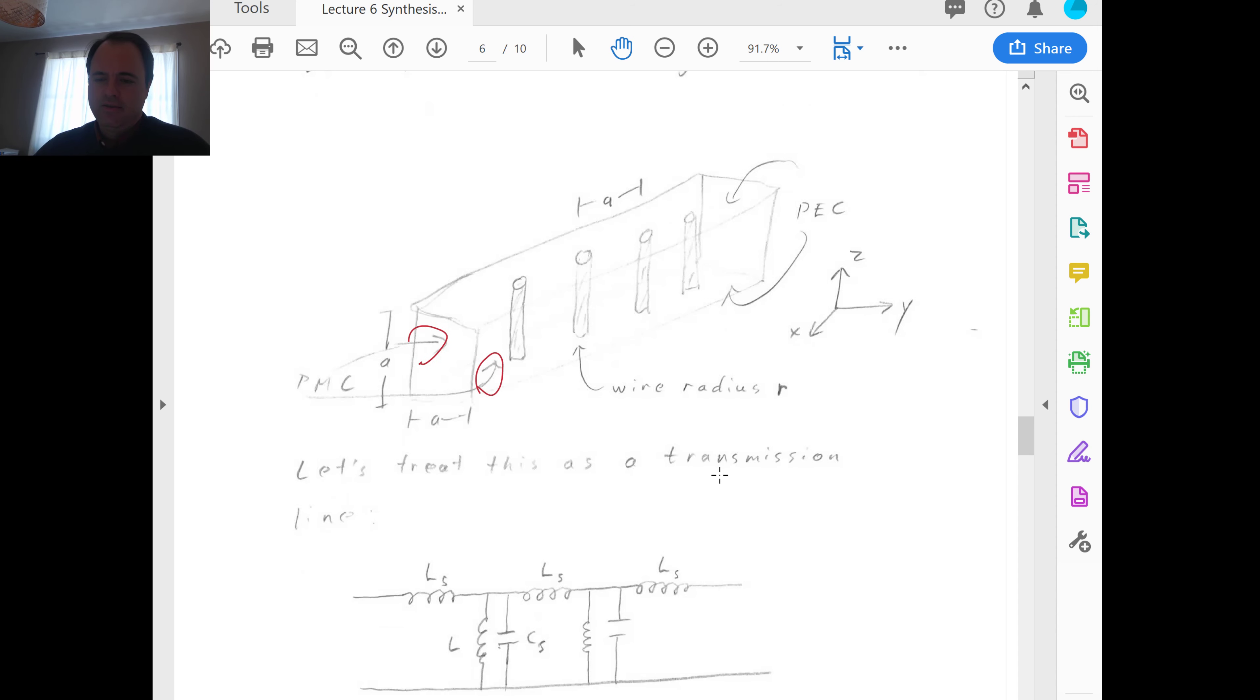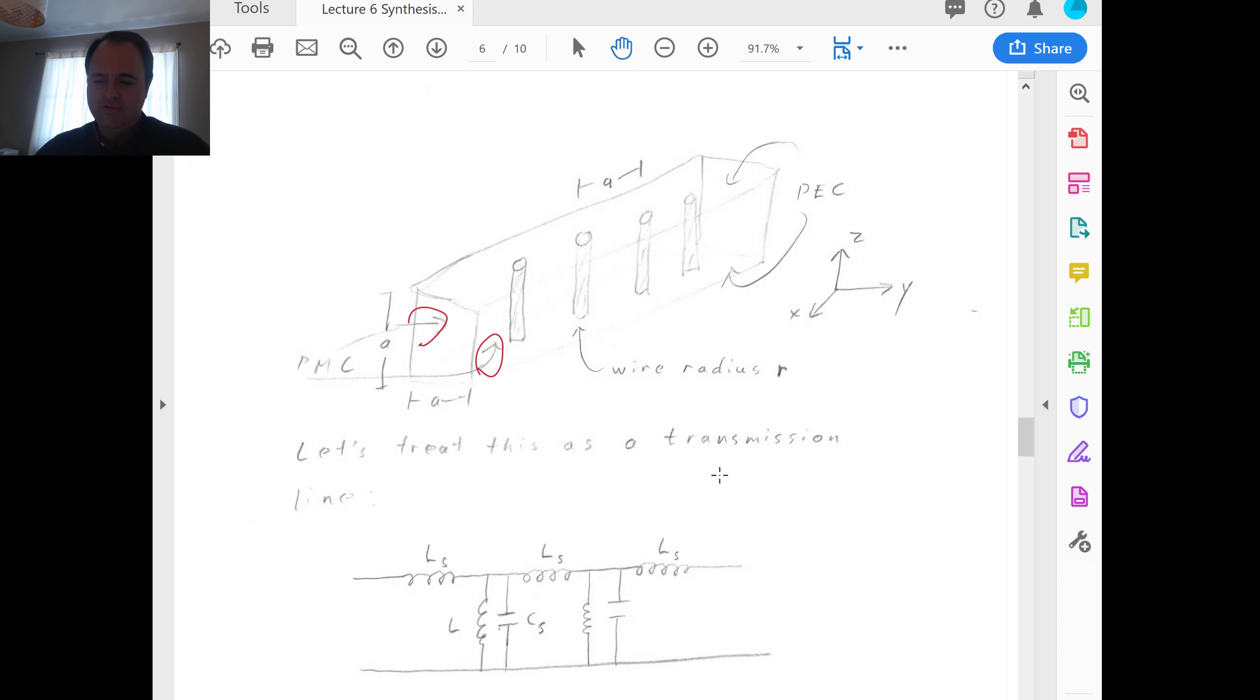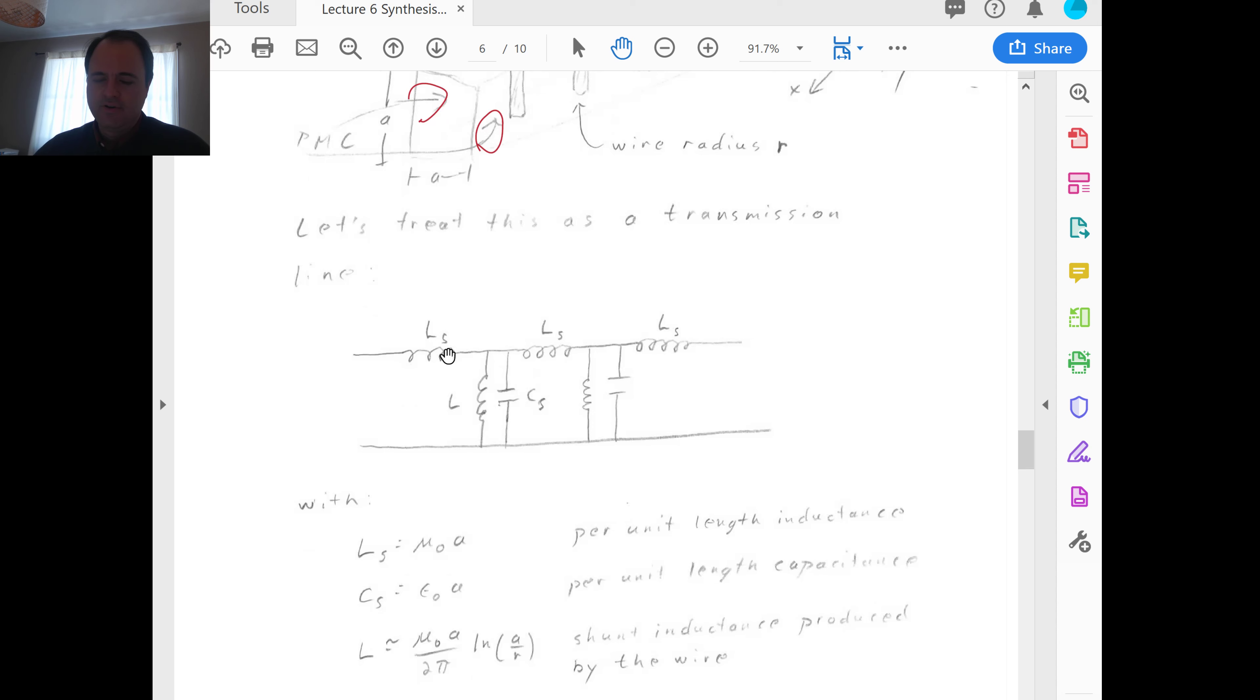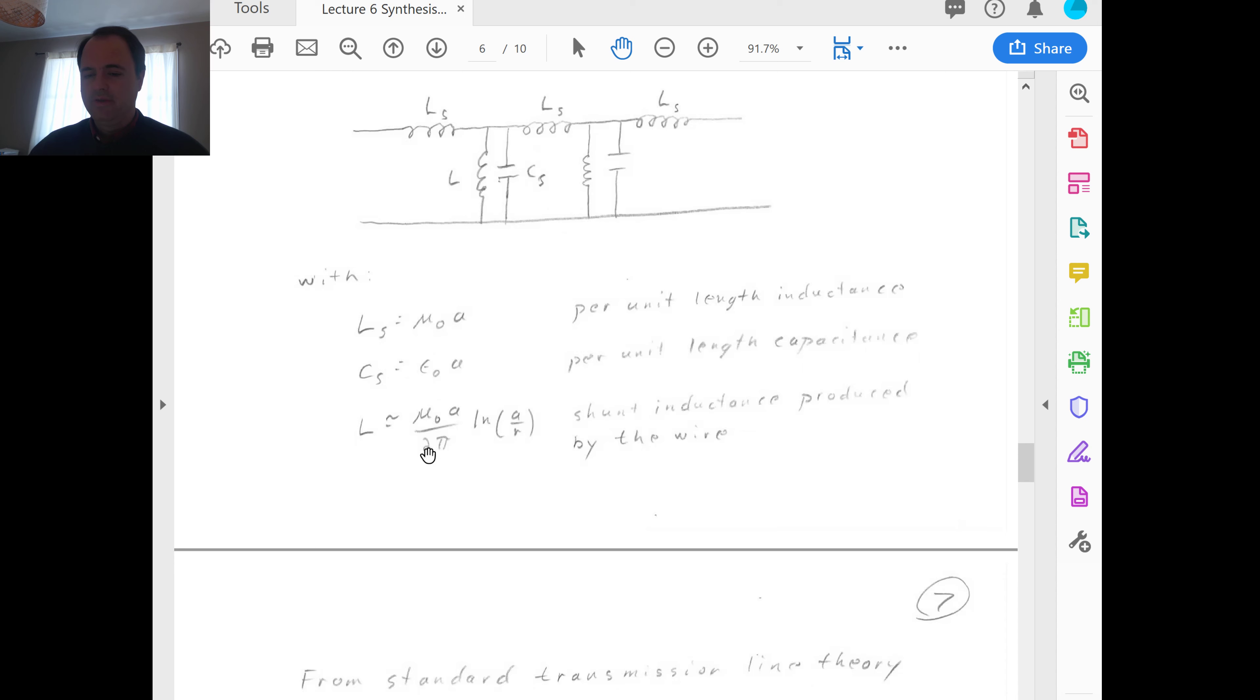So, with this, we then have a transmission line that can be modeled as this, with series inductances, LS, and series capacitance, CS. So, those are per unit length inductances, and then we have shunt inductances produced by the wires. So, this is by the wires, going from the transmission line to the ground. And that is estimated to be mu naught a over 2 pi log a over r. So, Pendry did this in reference, I think reference 2, which I uploaded on Moodle for you to see this in greater detail, the derivation of this right here. And I'm going to assign a homework problem on that, because this leads to an equation for epsilon.